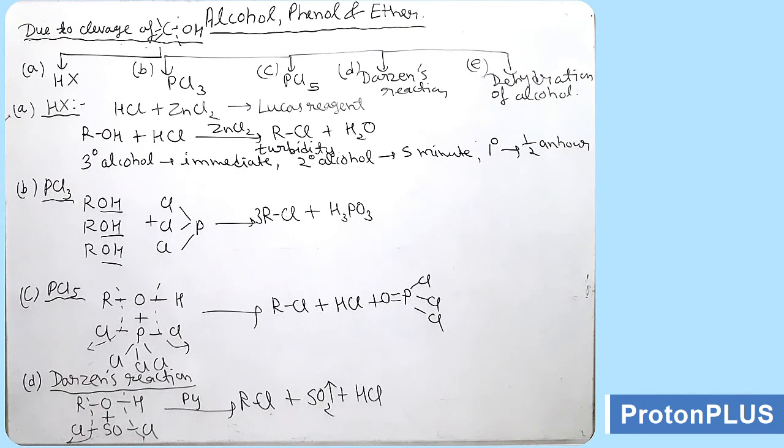All the first four reactions — HX, PCl3, PCl5, and Darzens reaction — were done previously for preparation of alkyl halide, so we are revising those reactions here.